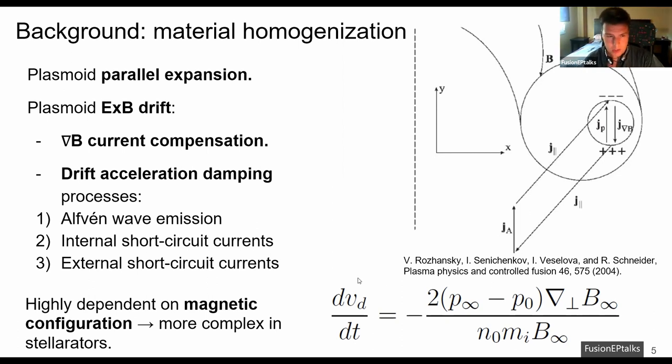In tokamaks, there are three well-known drift acceleration damping processes. However, in stellarators, since this process is strongly dependent on the magnetic configuration, this process is more complex and is not fully understood.